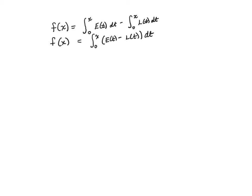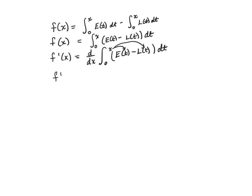To find the maximum of f, we differentiate it. By the First Fundamental Theorem of Calculus Part 2, when we differentiate the integral of a rate of change, we replace the upper limit of integration with the variable, so f prime of x is just E of x minus L of x. To get the critical values, we set that to zero. Solving on the calculator gives us x equals 6.20356, which we store in our calculator.